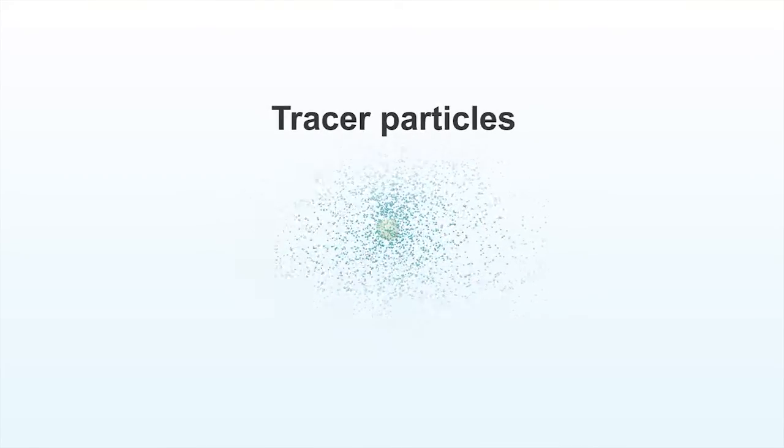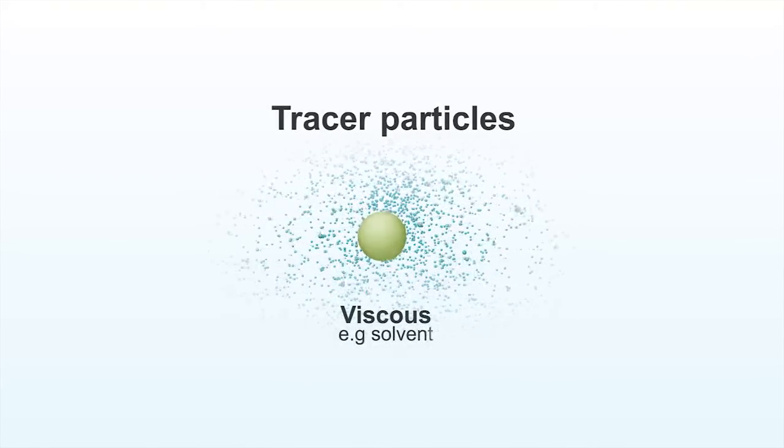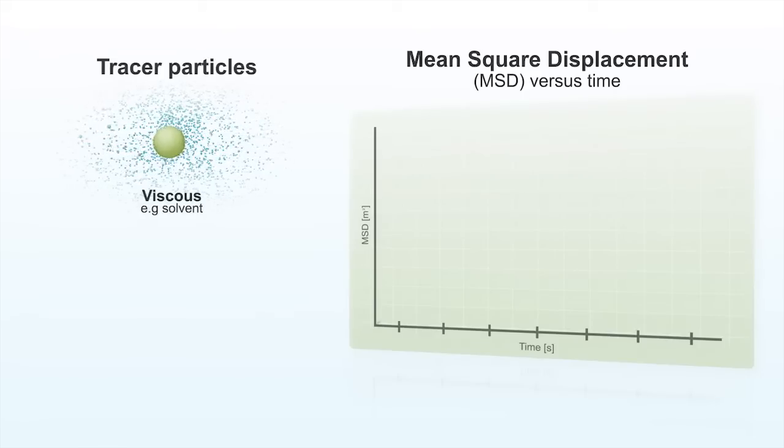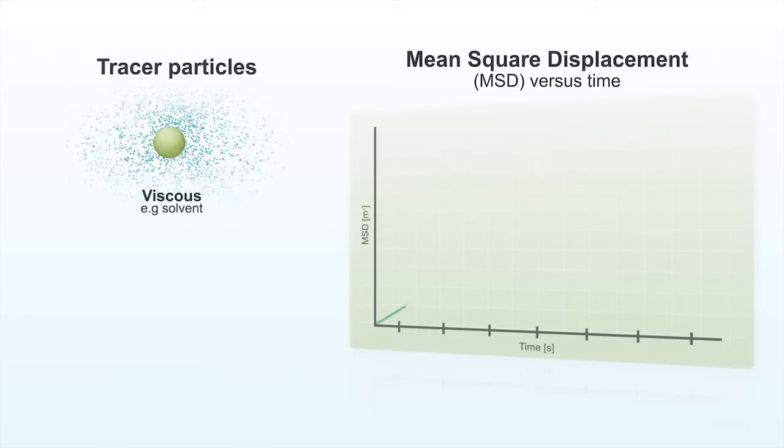Dynamic light scattering microrheology is an optical technique that involves tracking the motion of dispersed tracer particles of known size in a fluid to determine the rheological properties of the sample.